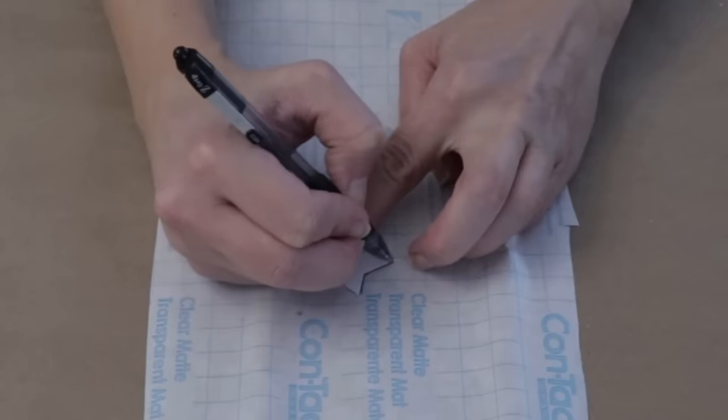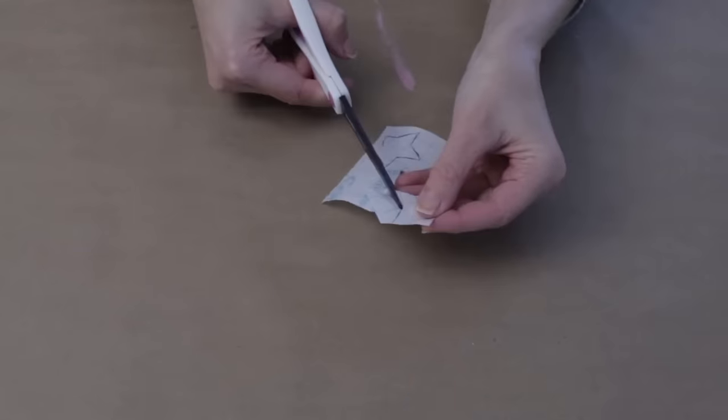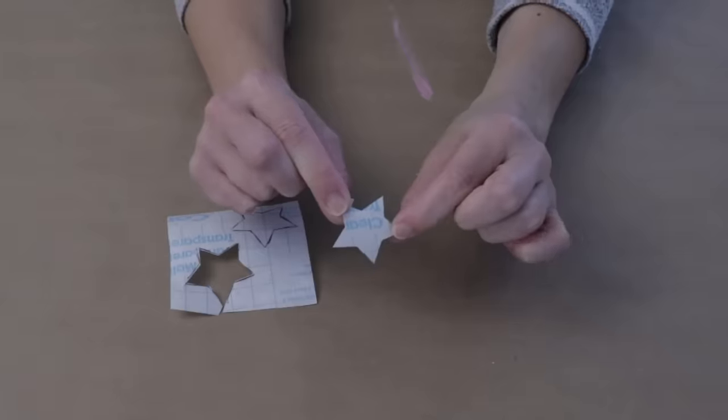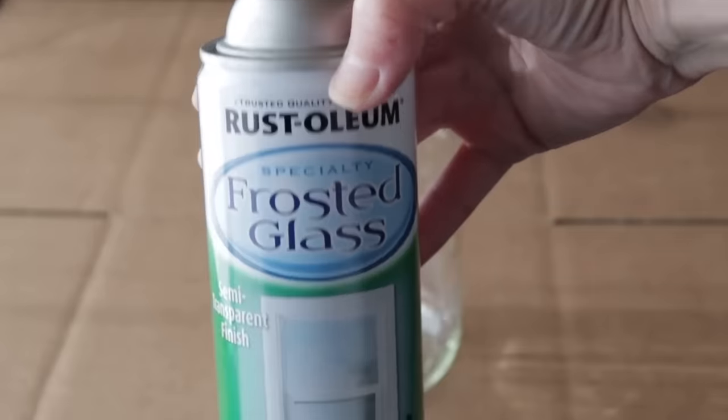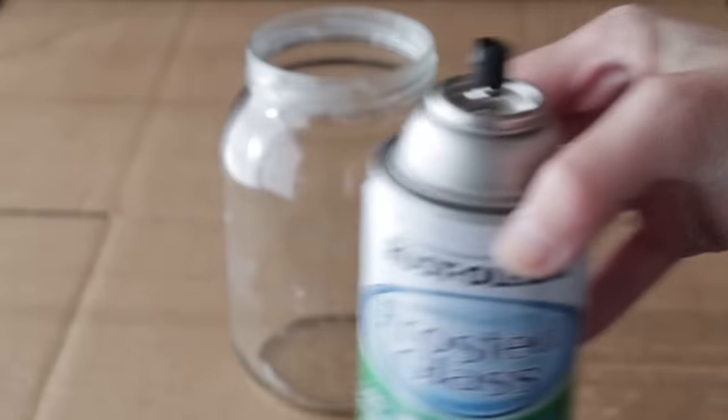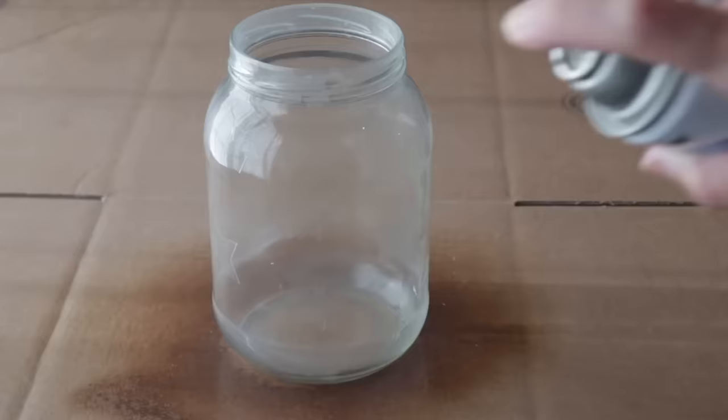Start by grabbing a roll of contact paper. Cut out a little star shape and I'm just going to trace it onto the contact paper and I'm going to cut out about a dozen stars in different sizes. Peel the back off and place them all around your pickle jar. Once all the stars are placed, it's time to paint this. We are going to use a frosted glass spray paint.